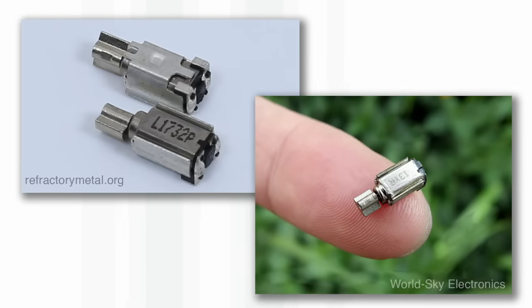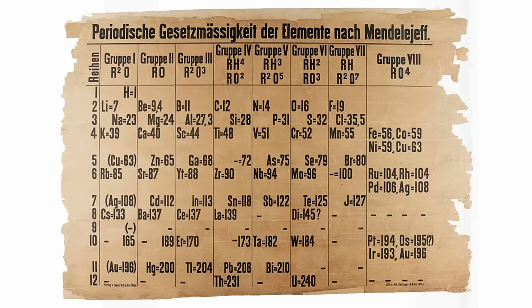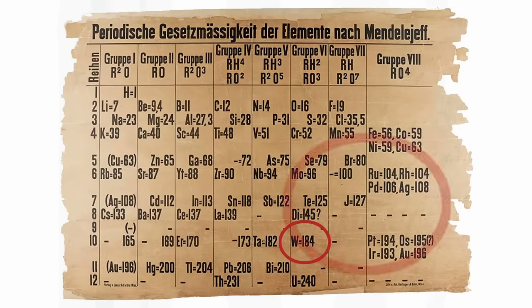The symbol is W, which is based on the German name for tungsten, Wolfram. This has stuck even though some of the other German symbols have disappeared over the years, for example the letter J for iodine. It has been known as an element for a long time. It's not one of these recently discovered elements.